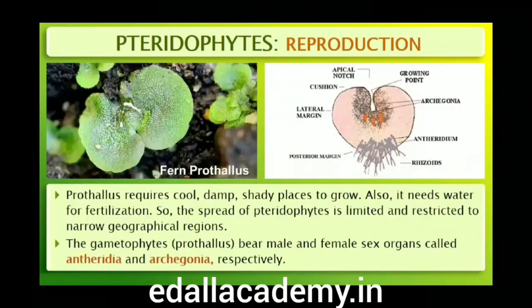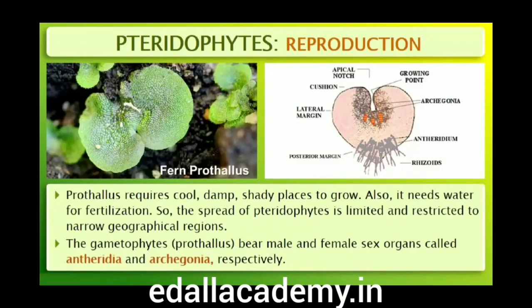These gametophytes require cool, damp, shady places to grow. Because of this specific restricted requirement and the need for water for fertilization, the spread of living pteridophytes is limited to narrow geographical regions. The gametophytes bear male and female sex organs called antheridia and archegonia respectively. Water is required for the transfer of antherozoids — the male gametes released from the antheridia — to the mouth of the archegonium.